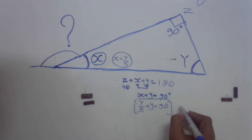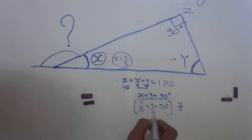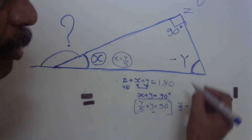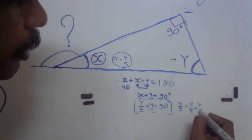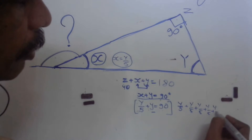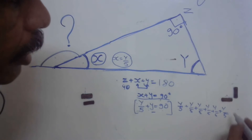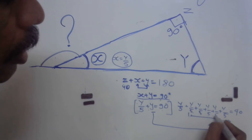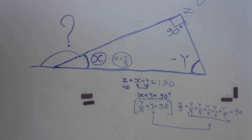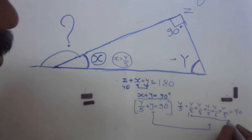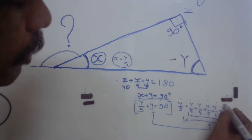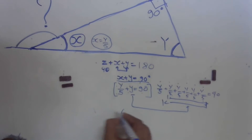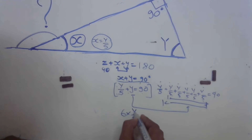Imagine this visually: x is one-fifth of y, and y itself is five one-fifths of y. So if we write y as five times one-fifth of y, then one-fifth of y plus five times one-fifth of y gives us six times one-fifth of y, which equals 90 degrees.